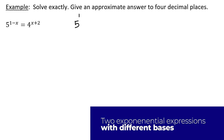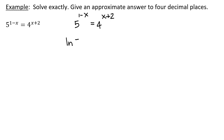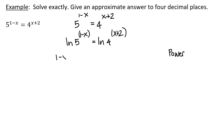In this example we're going to solve exactly and also give an approximate answer to 4 decimal places. We have 5 to the power 1 minus x equals 4 to the power x plus 2. We take the natural log of both sides: the natural log of 5 times the quantity 1 minus x equals the natural log of 4 times the quantity x plus 2.